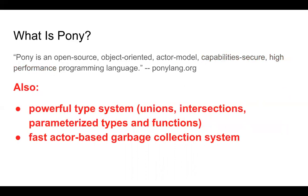Two other things to point out: Pony has a very powerful type system with things like unions, intersections, parameterized types, and functions. It also has fast actor-based garbage collection, so it's a memory-managed system — you don't have to free memory once you've allocated it. There's a fairly sophisticated system behind managing these objects. There are papers online you can read about it — it's really interesting, but I'm also a garbage collection nerd, so your mileage may vary.